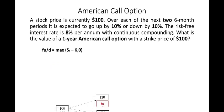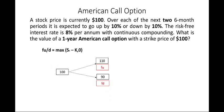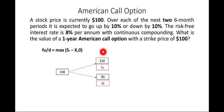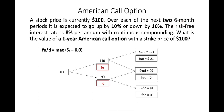We first construct a binomial tree. Today the spot market price is $100. The price increases by 10% to $110 or decreases by 10% to $90 after the first six-month step. After another six months: $110 grows to $121 or falls to $99, and $90 grows to $99 or falls to $81.